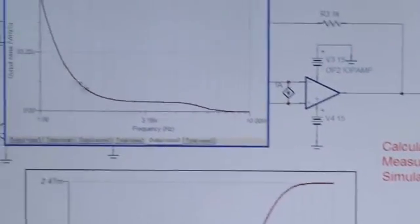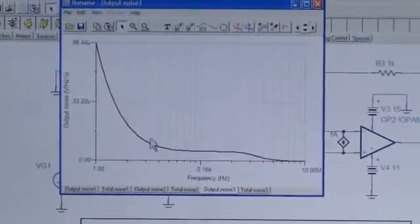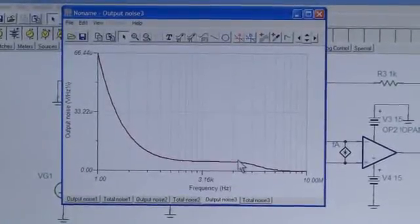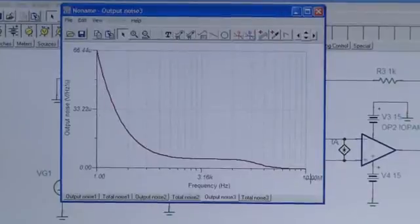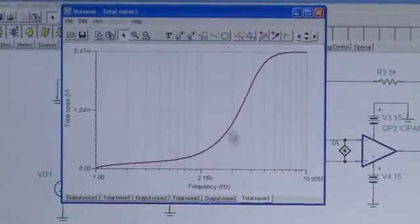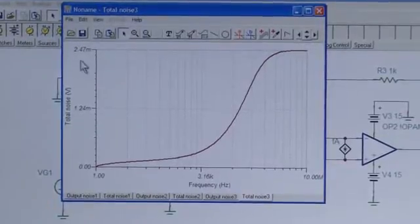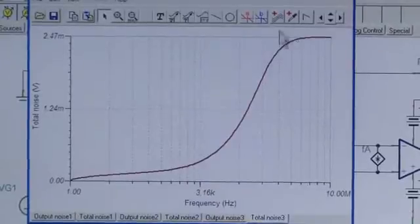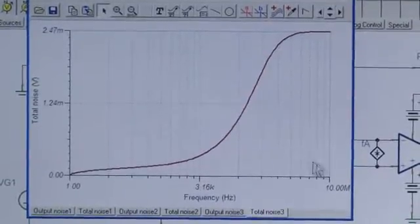We get the spectral density plot first, the 1 over F region, the broadband region, and then the amplifier's gain bandwidth rolls off the noise. Finally, we get a total noise. It's being integrated and converges to a value of about 2.47 millivolts RMS. And so that's the final total noise when the integration is complete.